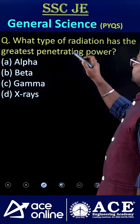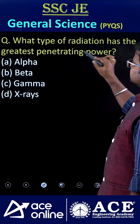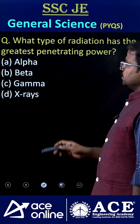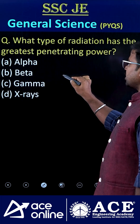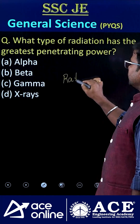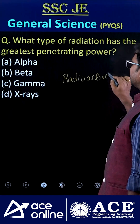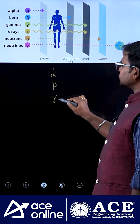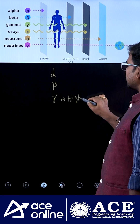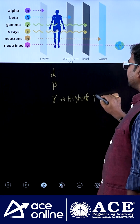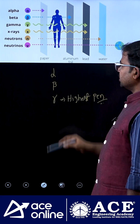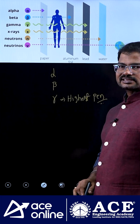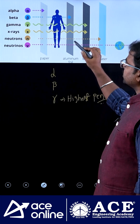Welcome to ACE Online. What type of radiation has the greatest penetrating power — alpha, beta, gamma, or X-rays? If you consider a radioactive element, it mostly emits alpha, then beta, then gamma rays. Gamma rays have the highest penetrating power — not only compared with beta and alpha, but even compared with X-rays as well.